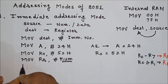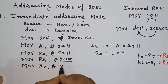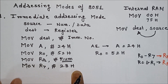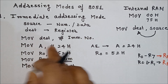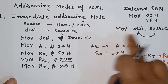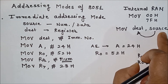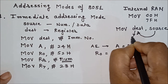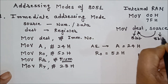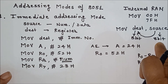For example, to store 28H in register R7, we write: MOV R7, #28H. Here an important condition is that the size of source and destination must be the same. If the destination is 8-bit, then the source must also be 8-bit. If the destination is 16-bit, then the source must be 16-bit.